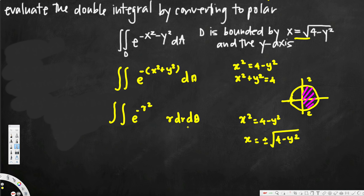Now let's look at the limits of integration. The inside limit is dr, so we have to find those limits. Looking at our bounded region picture, you can see r starts from the origin and goes all the way to the end of the circle, which is 2. So r goes from 0 to 2, no matter where you go. The limits of integration for the inside are 0 to 2.